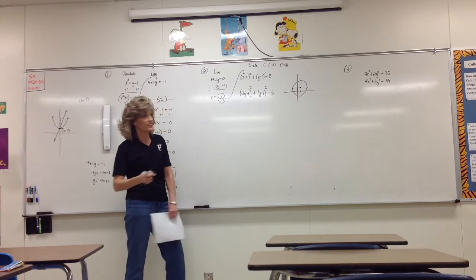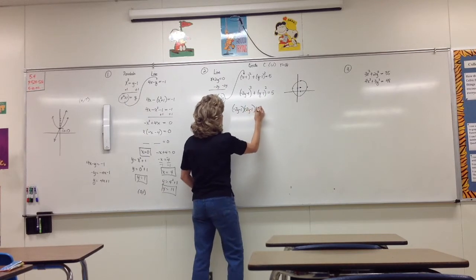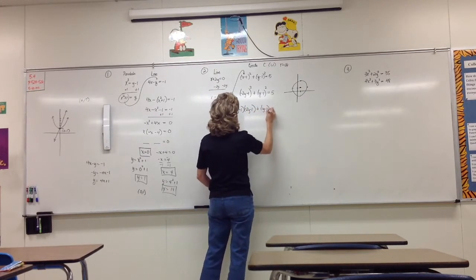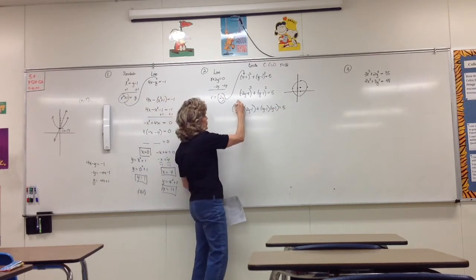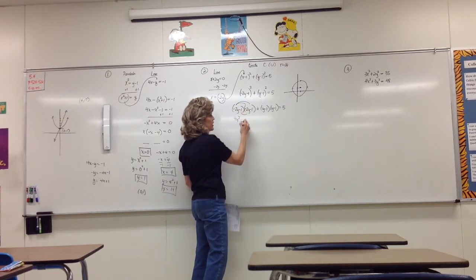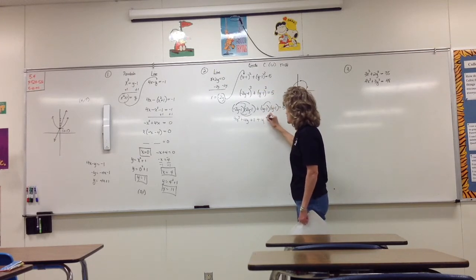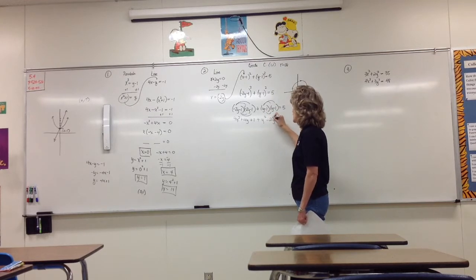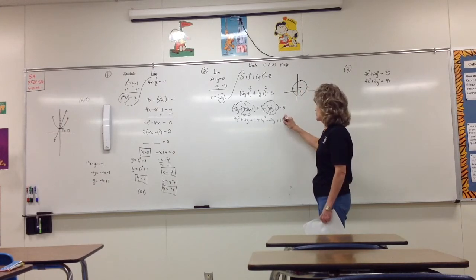It looks like this: (negative 2y minus 1) all squared, plus (y minus 1) all squared, equals 5. We expand: negative 2y minus 1 times negative 2y minus 1 gives 4y squared plus 4y plus 1. Then (y minus 1)(y minus 1) gives y squared minus 2y plus 1. Since it's quadratic, we'll make it equal zero by subtracting 5.